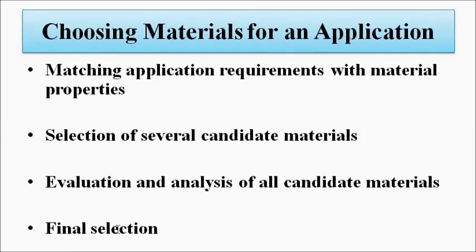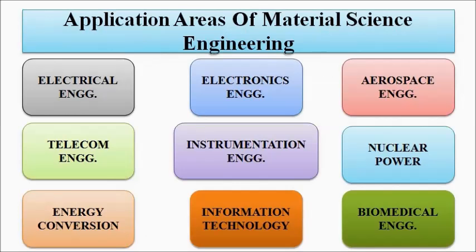The first step in material selection is matching the application requirements with material properties. The second step is assigning various materials with matching properties — for example, RTD can be designed using platinum or ceramics, and thermocouples using copper-constantan, chromel-constantan, or iron-constantan. They then evaluate and analyze all choices and make the final selection based on various factors such as cost considerations, design aspects, and availability of materials.